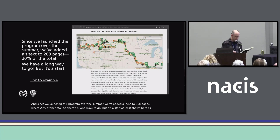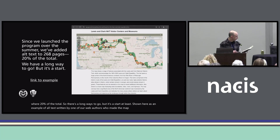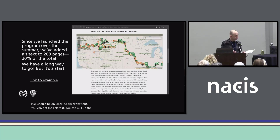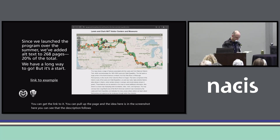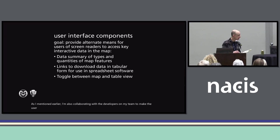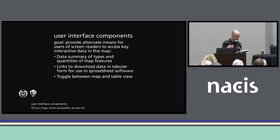Shown here is an example of alt text written by one of our web authors who made the map. I've provided a link here. When you get the slide deck — which I posted, the PDF should be on Slack — you can get the link to it, pull up the page. In the screenshot you can see that the description follows the map element. I'm also collaborating with the developers on my team to make the user interface components of our maps more accessible. We aim to provide an alternate means for users of screen readers to access the key interactive data in the map.